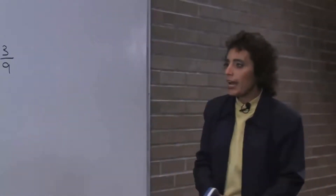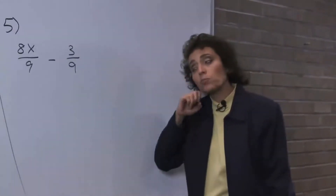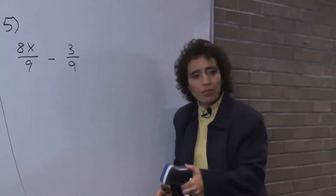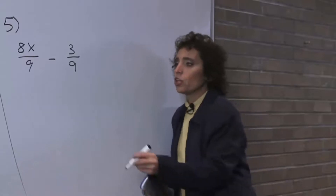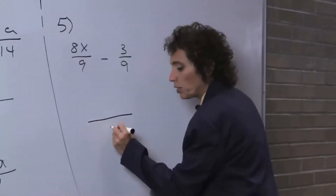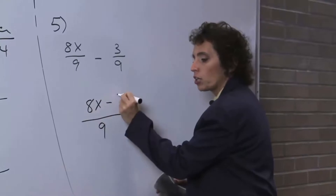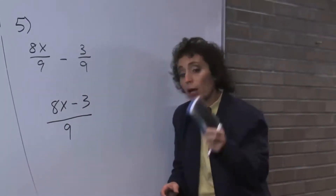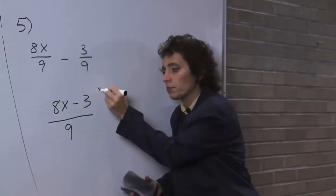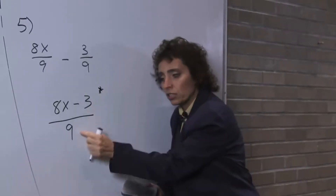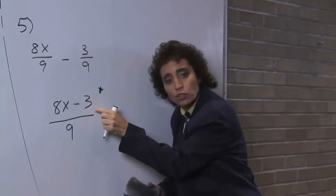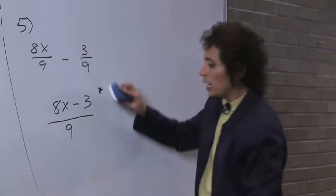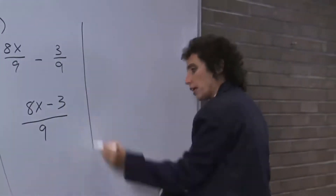Let's look at problem 5: 8x over 9 minus 3 ninths. I have 8x's, but I owe you 3. I don't owe you 3x's, I owe you 3. I can't combine them because they're not like terms. So the best we can do is keep the denominator and get 8x minus 3. Be careful — do not reduce here because this is a term. Remember, we can only reduce factors. Do not reduce. Be very, very careful.